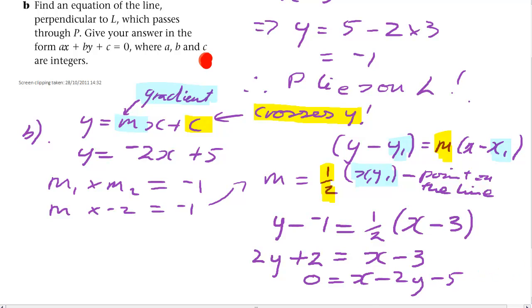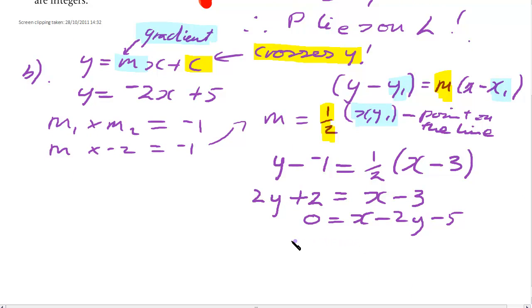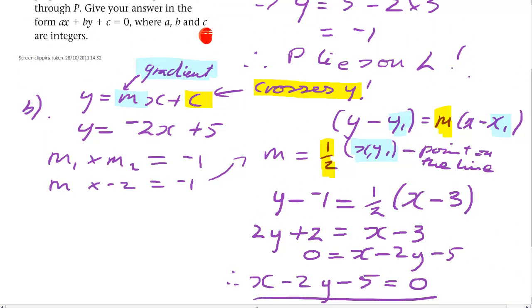Now, if we're going to write it exactly how they said, then we probably ought to write that the equation we wanted was x minus 2y minus 5 equals 0, where a is 1, b is minus 2, and c is minus 5. So let's just recap some of the theory there.